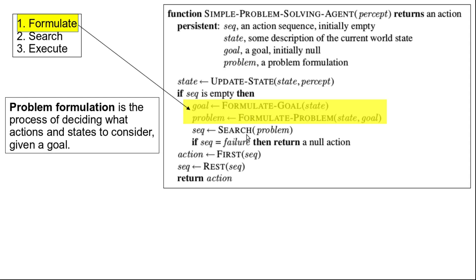These two lines in the pseudocode constitute the formulate step, where we formulate the goal and the problem. Problem formulation is the process of deciding what actions and states to consider given a goal. As discussed in the previous class, we need to specify the initial state, the actions that can be performed in each step, the transition model, the goal test, and the path cost.